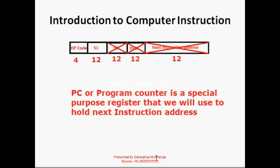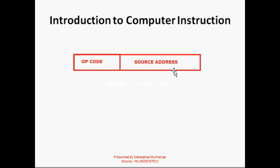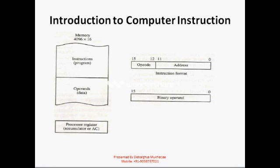We are also introducing another special-purpose register called PC, or program counter, that will hold the next instruction address. So we are also freed from those 12 bits for next instruction address. Our new instruction will become: opcode and source address. So if we have this architecture, our computer will have a 4096×16 RAM with one accumulator. The instruction will be a 16-bit instruction, bits 0 to 15, where bits 12 to 15 — 4 bits — are allocated for opcode, and bits 0 to 11 — 12 bits — are allocated for address.